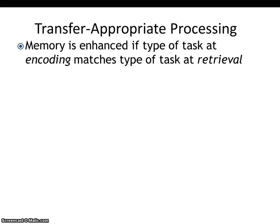Now let's talk about a related concept called transfer appropriate processing. The idea is that memory is enhanced when the type of task performed at encoding matches the type of task at retrieval.